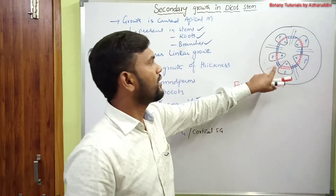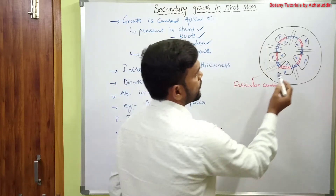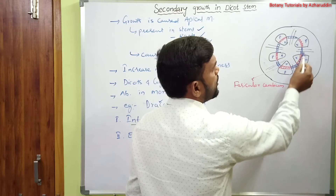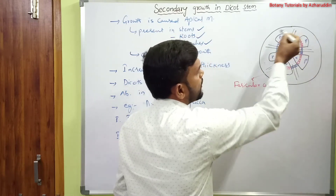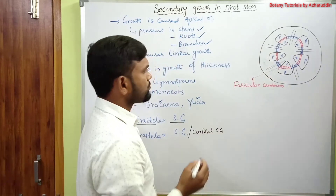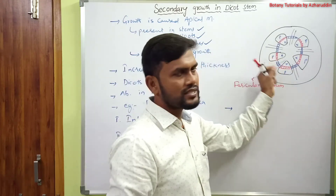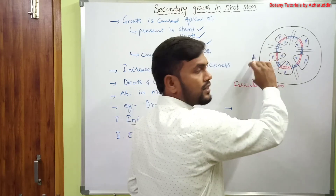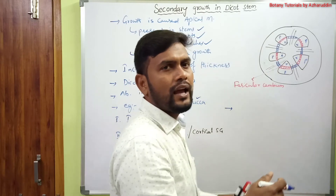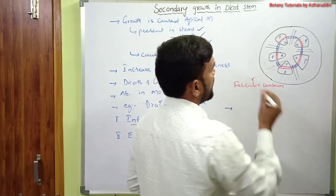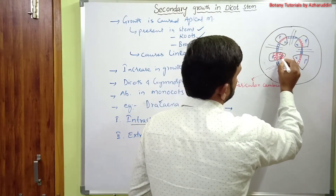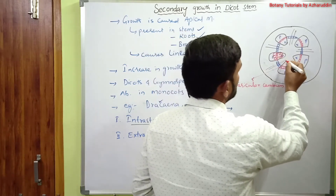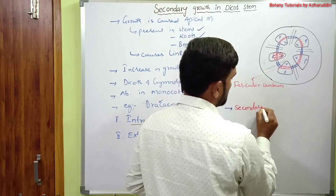The cambium developing from medullary rays joins with the fascicular cambium. These two cambia join together and form a continuous ring. The cambium cells then divide repeatedly by periclinal divisions and produce new cells on either side. The cells produced towards the inner side differentiate to form secondary xylem.